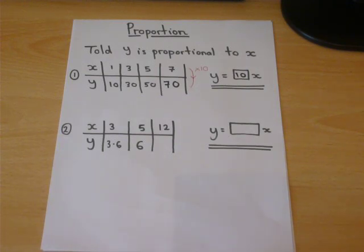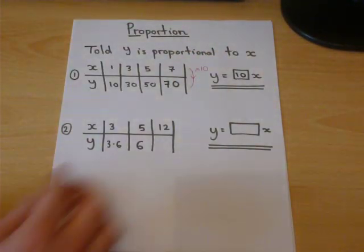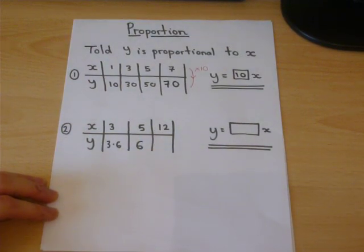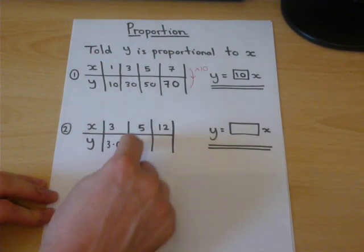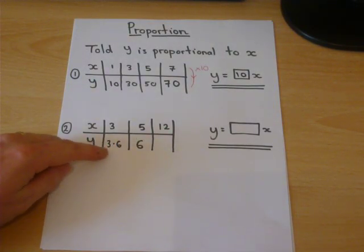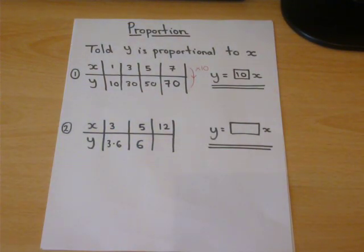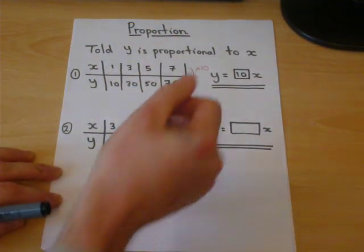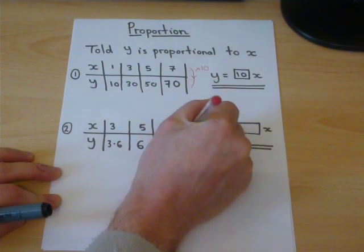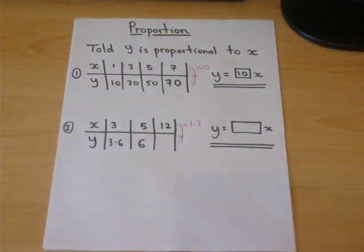Now, it's not always as obvious. But if you're told that y is proportional to x, then in this case here, we're looking at what you times x by to get to y. Now, if you get a calculator and do 3.6 divided by 3, and if you do 6 divided by 5, you find that the answer is 1.2. So the multiplier is just 1.2.